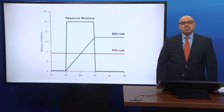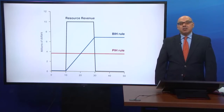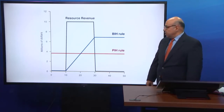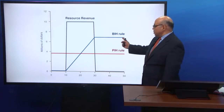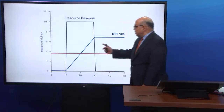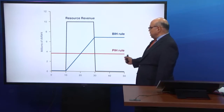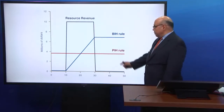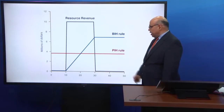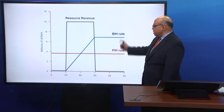Let's look at how Bird-in-Hand (BIH) works as a long-run fiscal benchmark. We'll examine the profile of spending and saving under the Bird-in-Hand approach, comparing the BIH — shown as the blue line — versus the PIH, along with the profile of resource revenue. We've already covered the PIH, but what about the BIH?